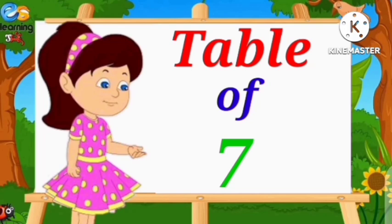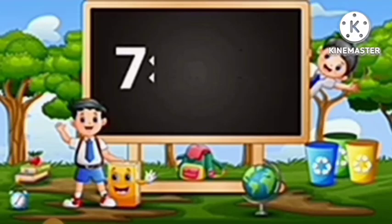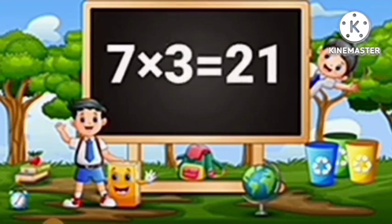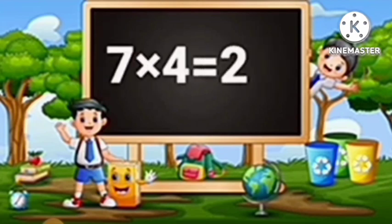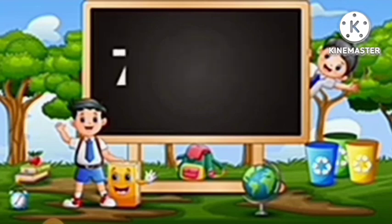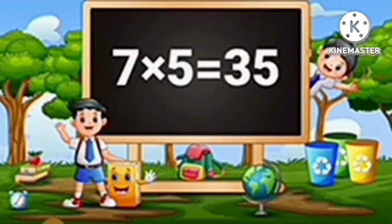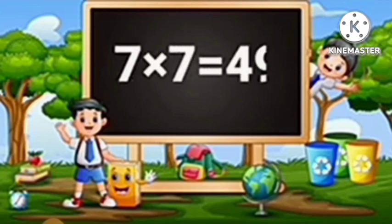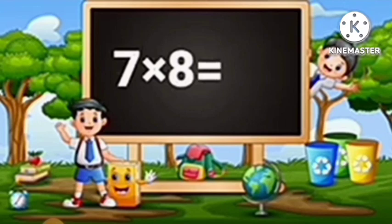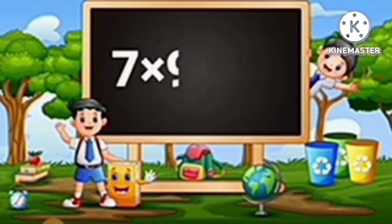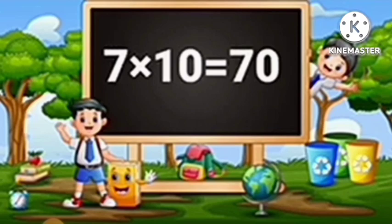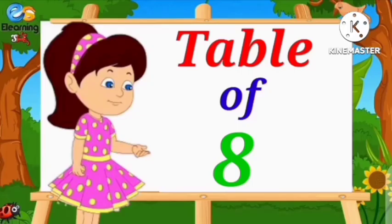Table of Seven. Seven ones are seven. Seven twos are fourteen. Seven threes are twenty-one. Seven fours are twenty-eight. Seven fives are thirty-five. Seven sixes are forty-two. Seven sevens are forty-nine. Seven eights are fifty-six. Seven nines are sixty-three. Seven tens are seventy.